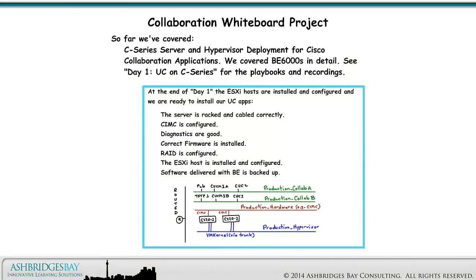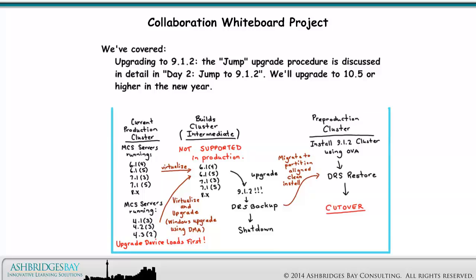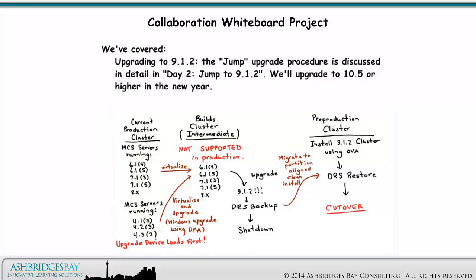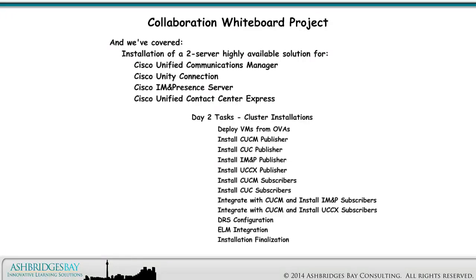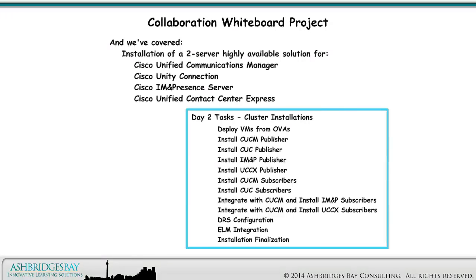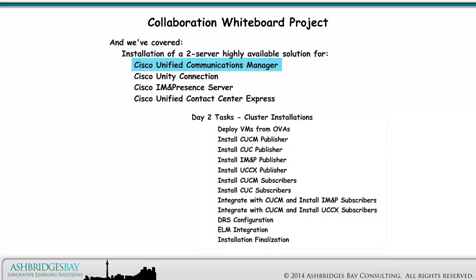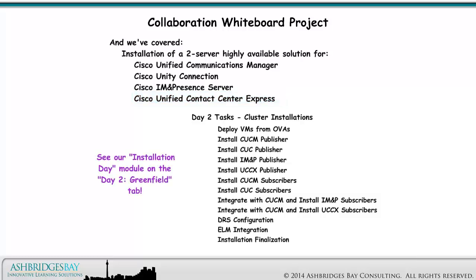So far we've covered C-Series server and hypervisor deployment for Cisco collaboration applications, and covered BE6000s in detail — see Day 1 UC on C-Series for the playbooks and recordings. We've covered upgrading to 9.1.2, discussed in detail in Day 2 Jump to 9.1.2, and will upgrade to 10.5 or higher in the new year. We've also covered installation of a two-server highly available solution for Cisco Unified Communications Manager, Cisco Unity Connection, Cisco IM and Presence, and Cisco Unified Contact Center Express. See our Installation Day module on the Day 2 Greenfield tab.